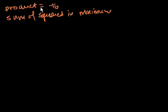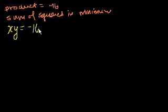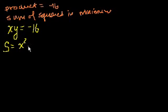Two numbers whose product is negative 16 and the sum of their squares is a minimum. Let's call those two numbers x and y. Their product is minus 16, so x times y equals minus 16. The sum of squares — I'll call that s — is equal to x squared plus y squared. This is the function we want to optimize, and we want to find its minimum value.